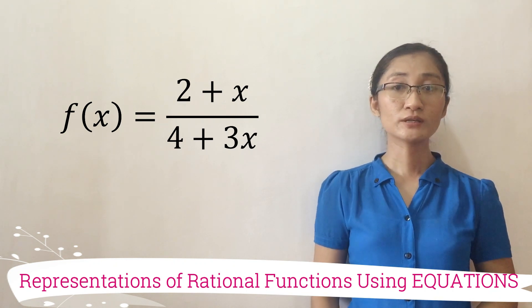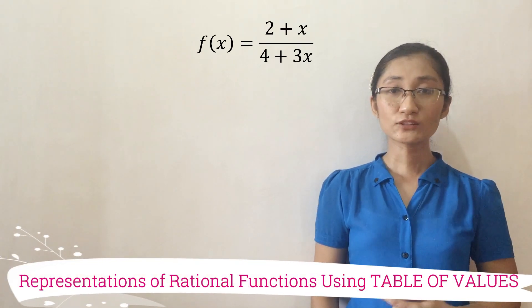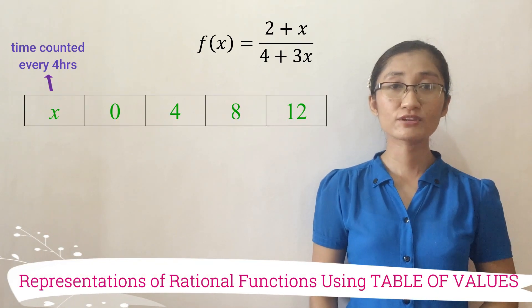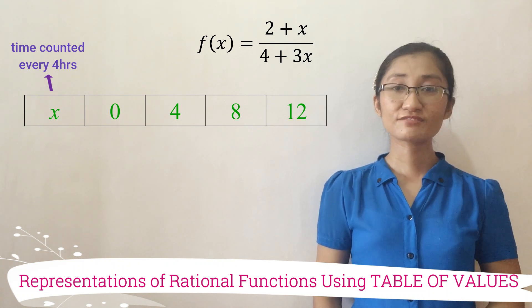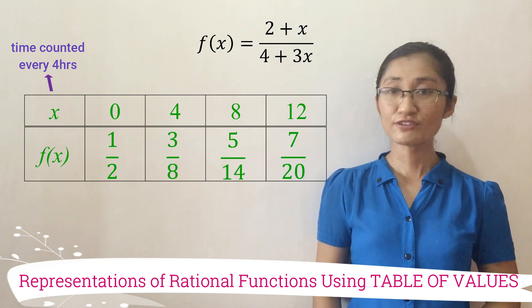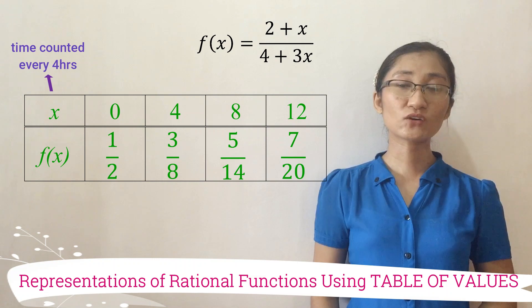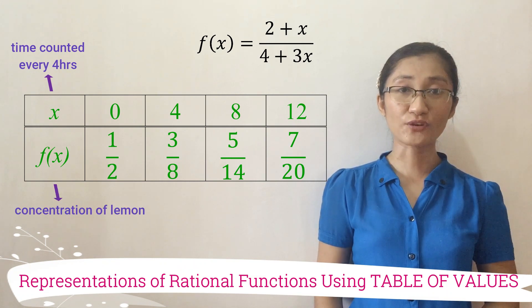This equation may be detailed further using table of values. Take note that x is counted every 4 hours. By evaluating the function at the given x values, these are the derived f of x values representing the concentration of lemon corresponding to the time counted every 4 hours.